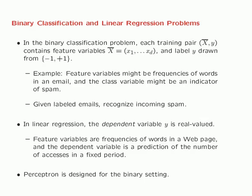To give a specific example of the binary classification problem, you might have an email spam detection application. In this case, the feature variables might be the frequencies of the words — x1 through xd might be the frequencies of your d words in a lexicon. The class variable might be an indicator of whether or not that email is spam. The idea is that given labeled emails, you want to build a training model so that for an unlabeled email, you can recognize the incoming spam.